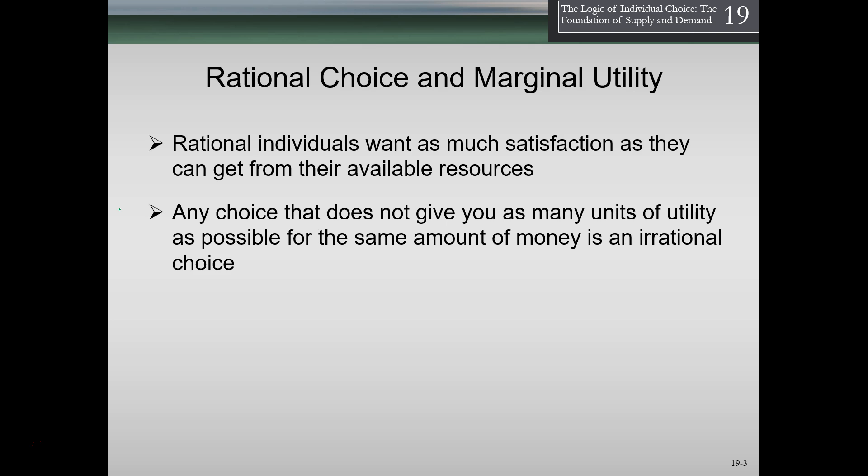If we buy something and the cost of it is more than the pleasure we're getting from it — the utilities — then we made an irrational choice. We're assuming that if people bought something, however they think of utilities in their head, because we don't know exactly how to measure it and it's different for each individual, if they're purchasing it, the logic in their head said this is worth purchasing: the benefit I'm getting from it is more than the cost. We don't think in explicit utility units, but we do make that logical choice in our head.